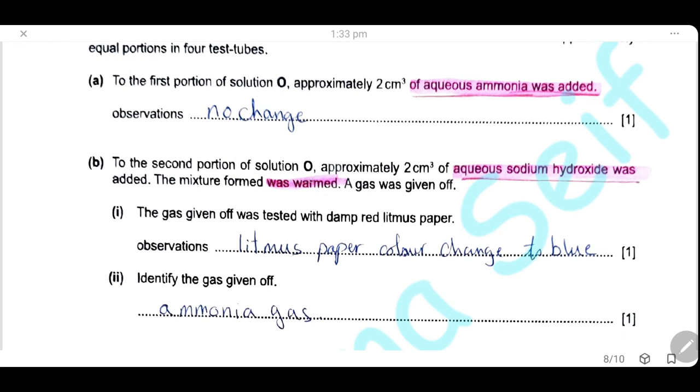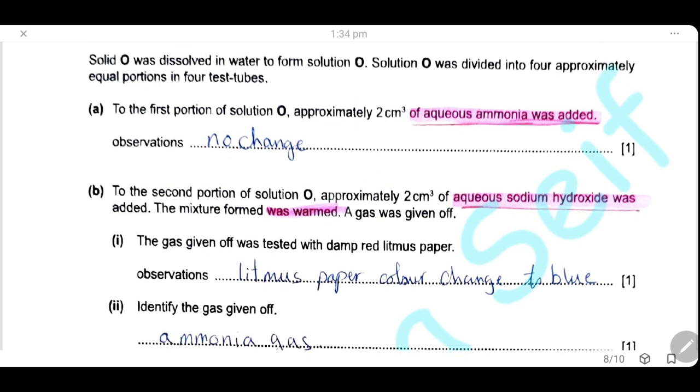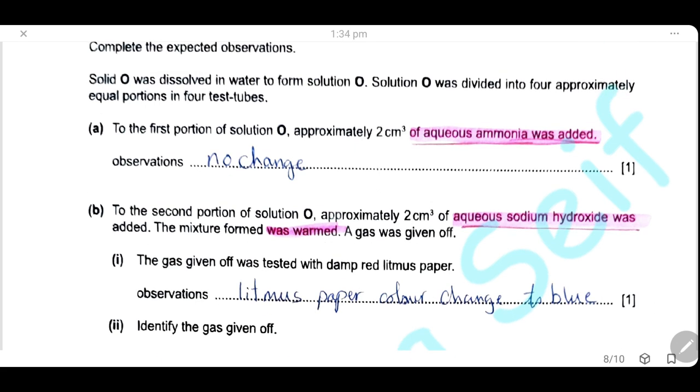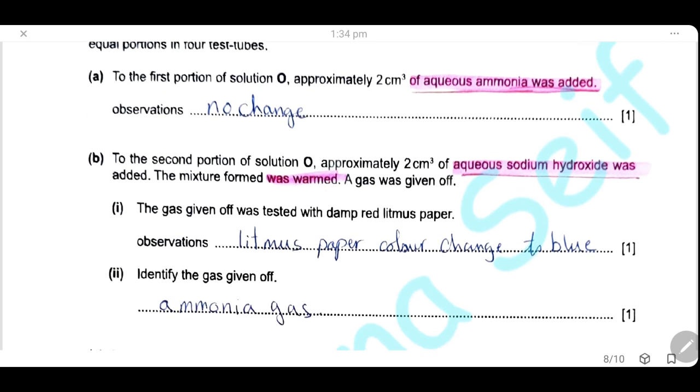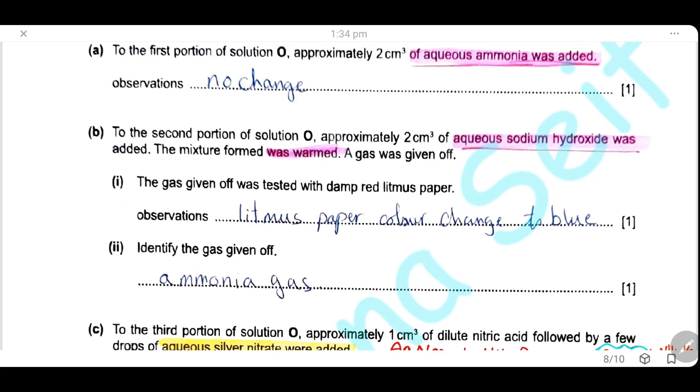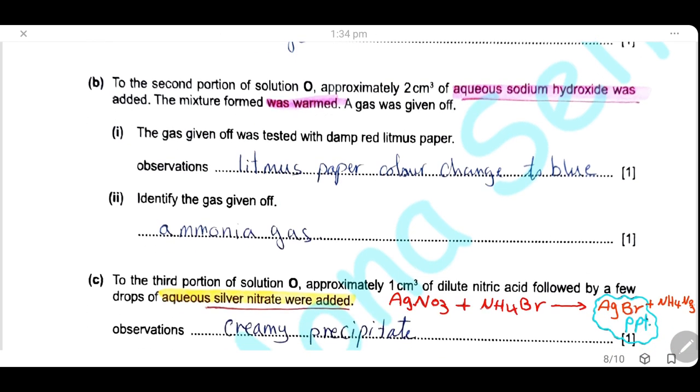To the second portion of solution O, 2 cm³ of aqueous sodium hydroxide was added. The mixture warmed and a gas is given off. This is the test for ammonium ions or ammonium salts: reaction with sodium hydroxide to produce ammonia gas. So our observation will be the gas will turn the damp litmus paper from red to blue, and the gas is ammonia gas.